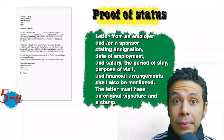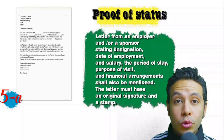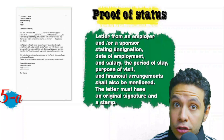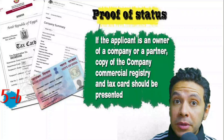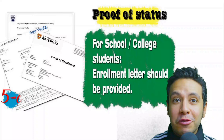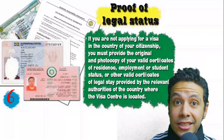In most visa application processes you will need to provide a proof of status. If you are an employee, provide a letter from your employer or HR department mentioning your name, work details, salary, address, and contact numbers — with an original signature and stamp. If you own a business, your commercial registry and tax card must be presented. If you are a student, an enrollment letter from your university or school is required. If you are applying from a country different from your own, you will need to provide proof of legal residence in that country, or a valid residence visa.